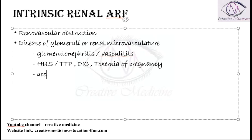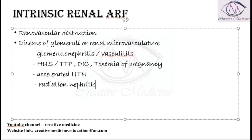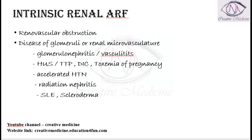In malignant or accelerated hypertension, end organ damage is present which results in glomerular disease. It can also be due to radiation nephritis where the kidney is involved, or connective tissue disorders like systemic lupus erythematosus or scleroderma where the glomeruli are involved. All diseases involving the glomeruli or renal microvasculature are important in intrinsic renal acute renal failure.